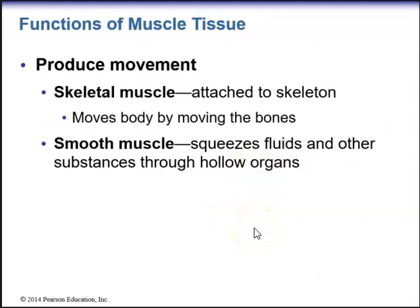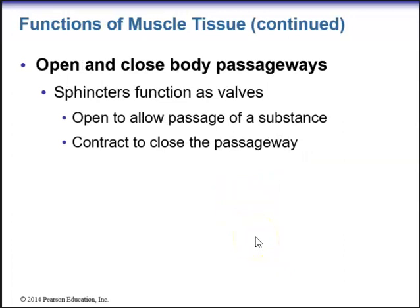We have different functions of muscle tissue. One main function is to produce movement — skeletal muscle is attached to bone and moves the body by moving the bones. Smooth muscle squeezes fluids and other substances, like a baby out of the uterus, through the hollow organs. Muscle tissue is also important for the opening and closing of body passageways. Muscles called sphincters function as valves — they open to allow passage of a substance and contract to close the passageway.